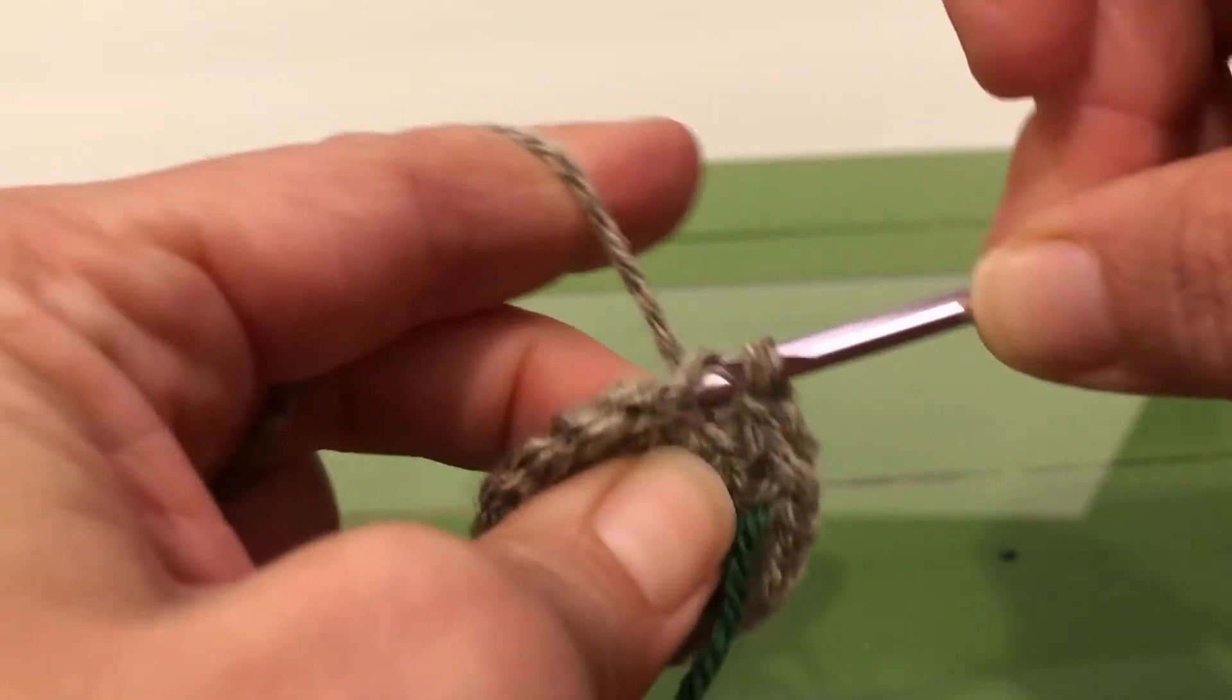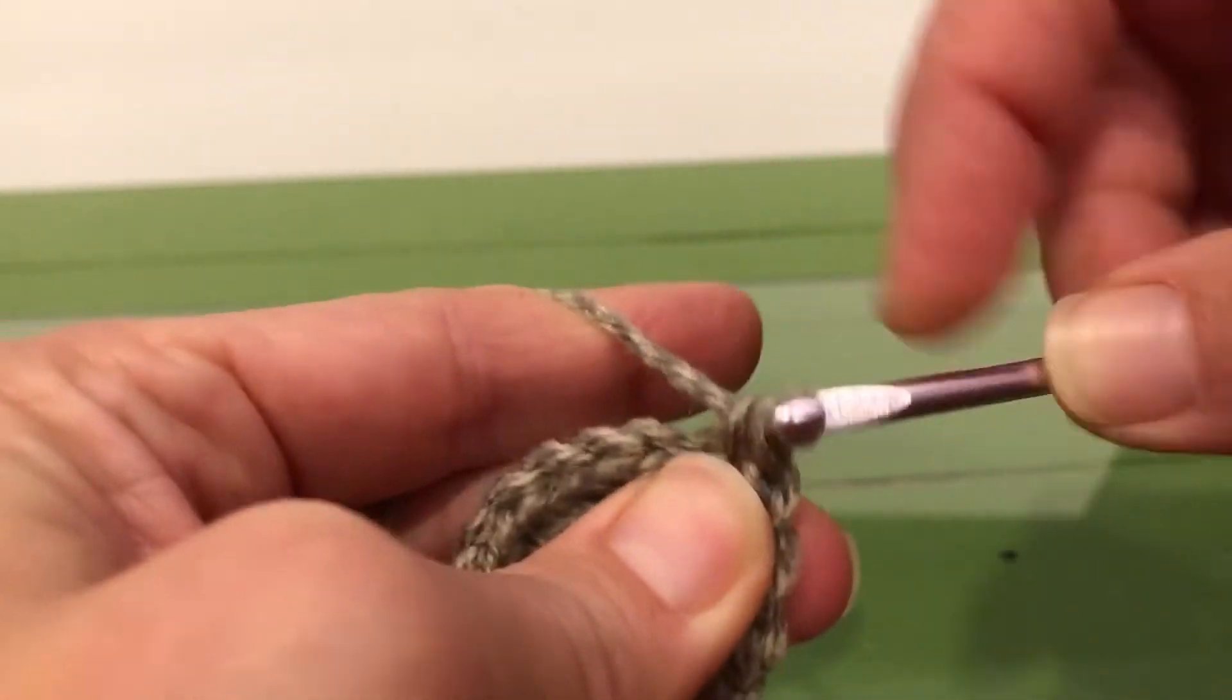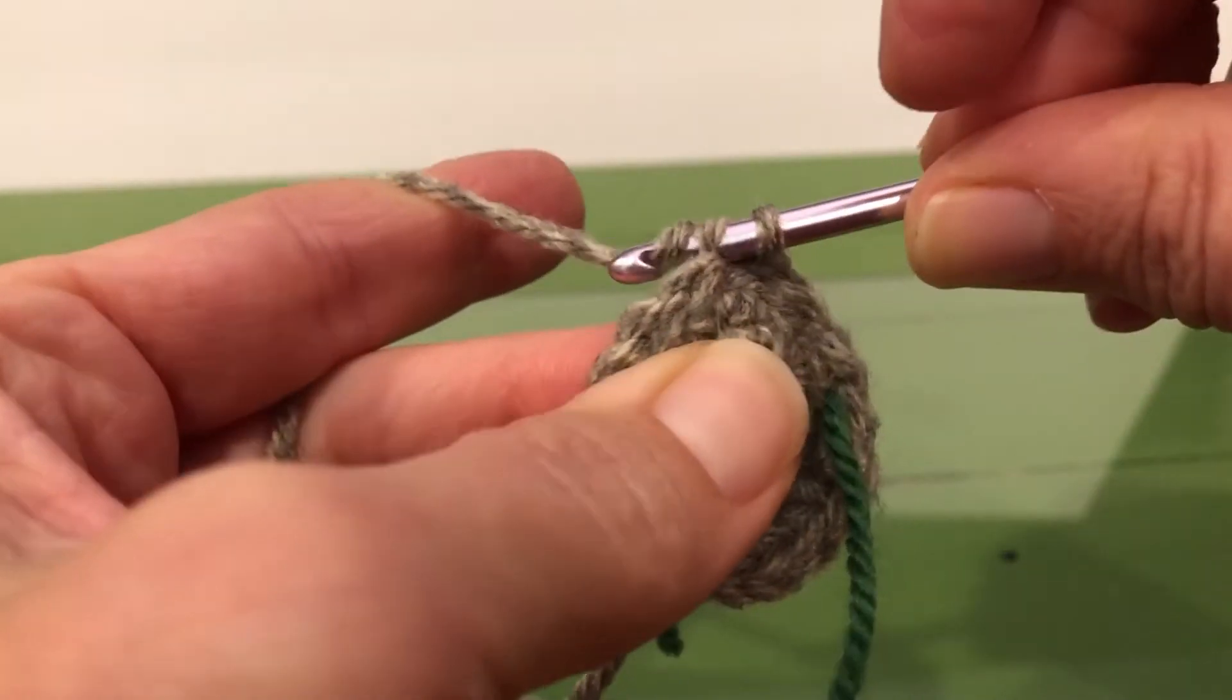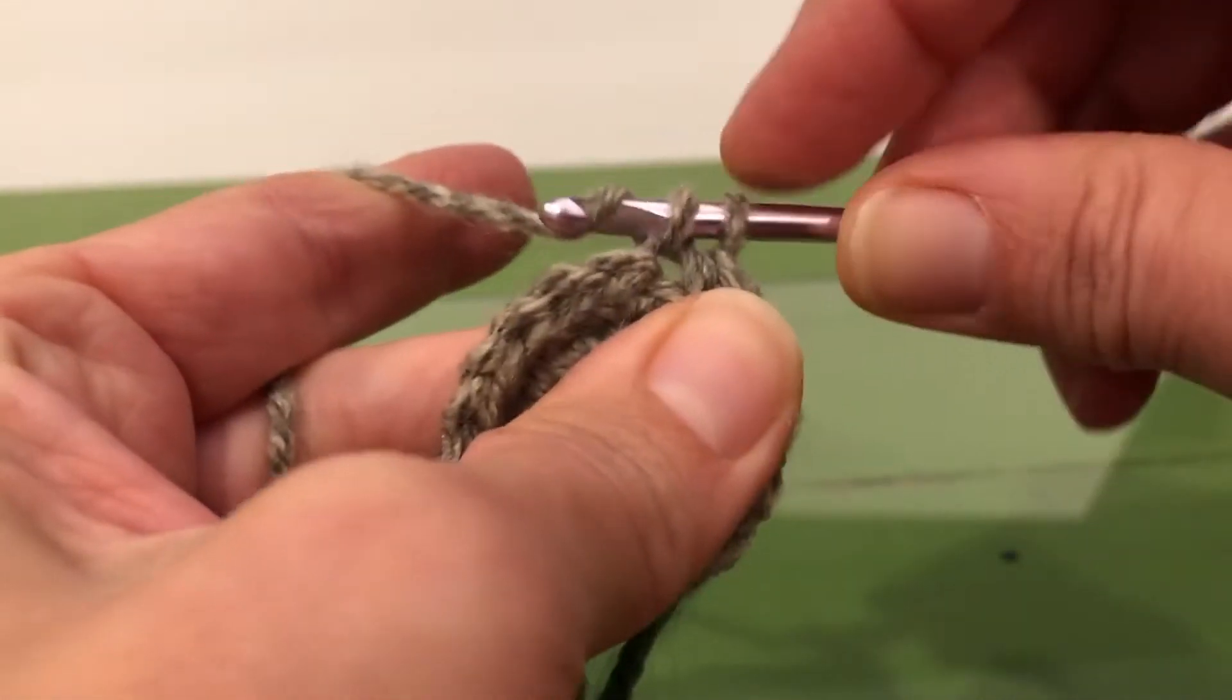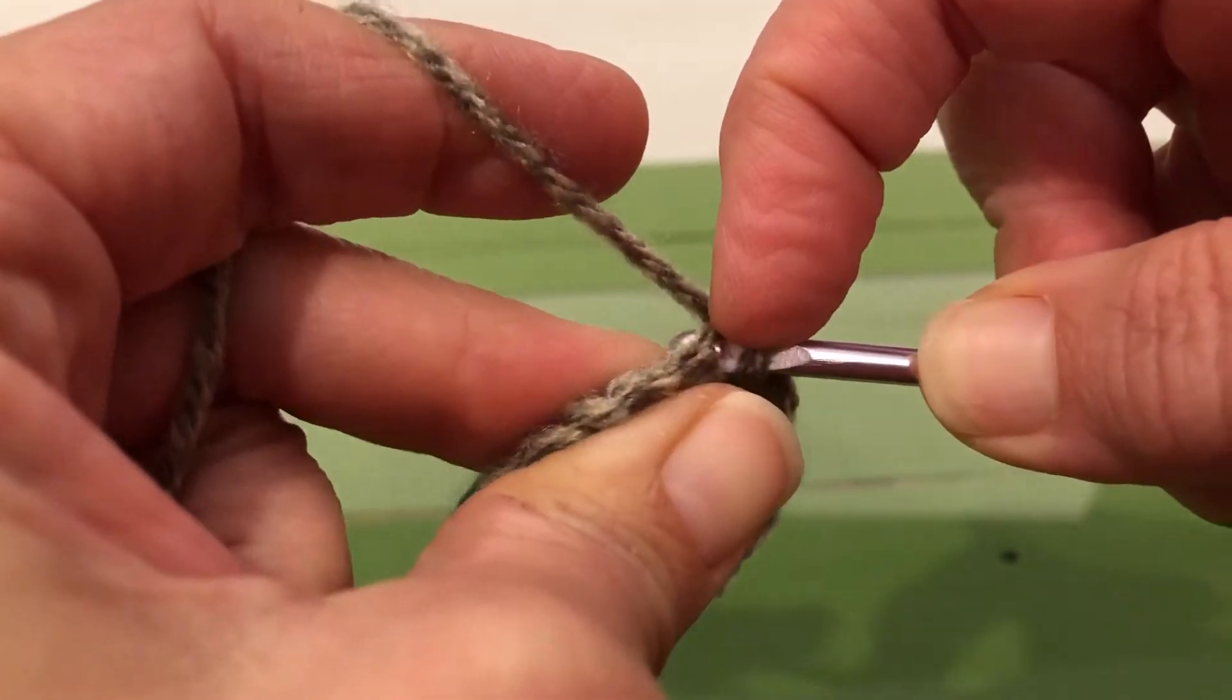Through, yarn over, pull through, yarn over, pull through the two. Only in the back of the stitch, so you're just picking up that one piece, and we're going to keep moving through. We're going to do this all the way around until we reach our marker.